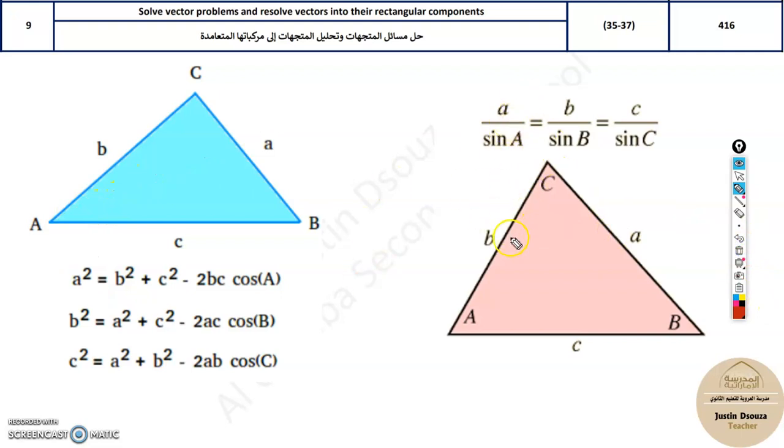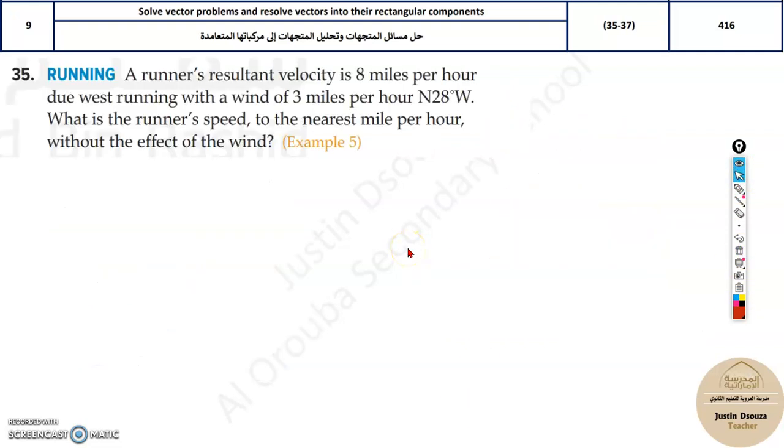Law of sines is also very simple. If this side A is known, divided by sine of the opposite angle A, equals B divided by sine B. Any two of these can be used to find whatever is unknown. Now let's solve some real world problems.